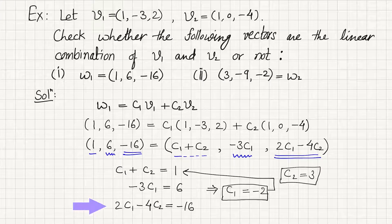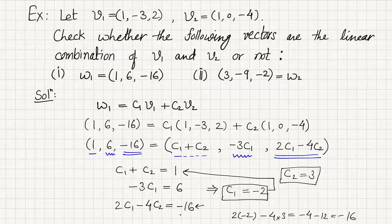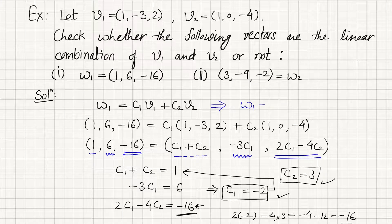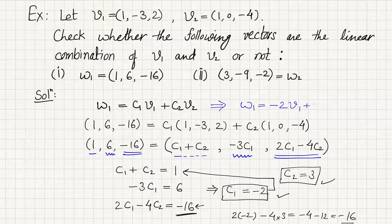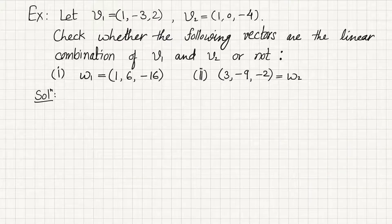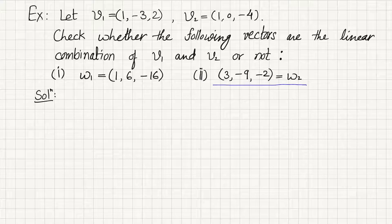Putting c1 = -2 and c2 = 3 into the equation confirms the result. So w1 can be written as -2*v1 + 3*v2, meaning w1 is a linear combination of v1 and v2. Now we have to check whether w2 is a linear combination of v1 and v2.